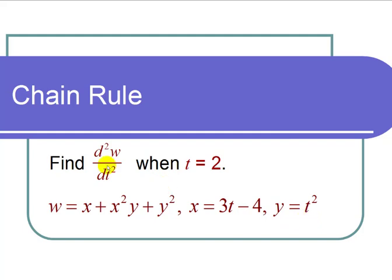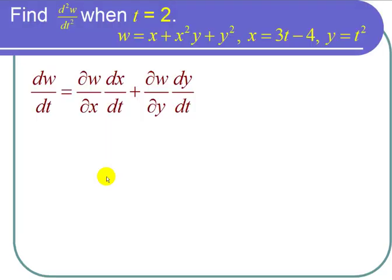To find the second derivative of w with respect to t, we first need to find the first derivative of w with respect to t. Using the chain rule: dw over dt equals del w over del x times dx over dt plus del w over del y times dy over dt.